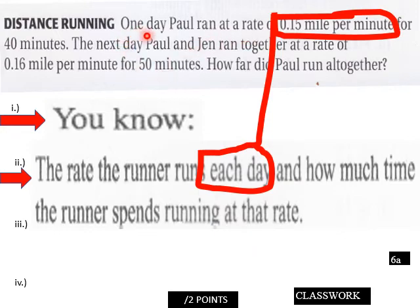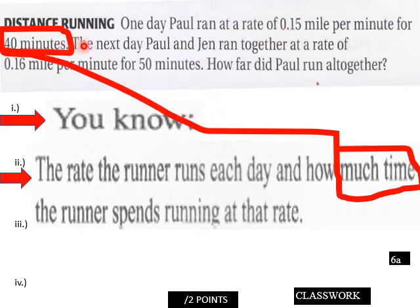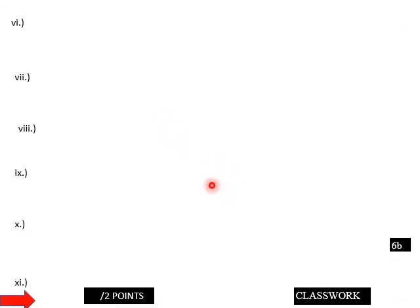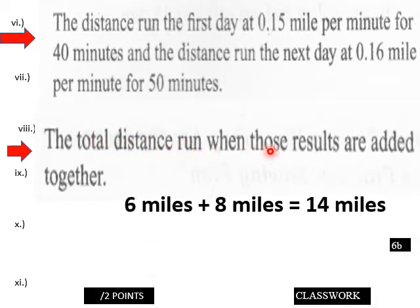The rate the runner runs each day and how much time the runner spends running at that rate. So each day here, 0.15 per minute on day one for 40 minutes. And then he ran 0.15 for 40 minutes. And then on the second day, you need to know. And so this solution will be the distance run the first day at 0.15 miles per minute for 40 minutes, and the distance run the next day at 0.16 miles per minute for 50 minutes. What does that equal? The total distance run when those results are added together is 6 miles for 0.15 times 40, and then 0.16 times 50 would be 8 miles. So 6 miles plus 8 miles would equal 14 miles.